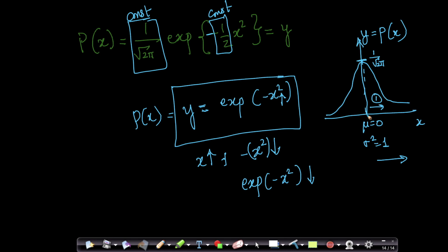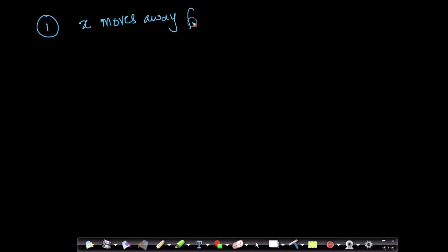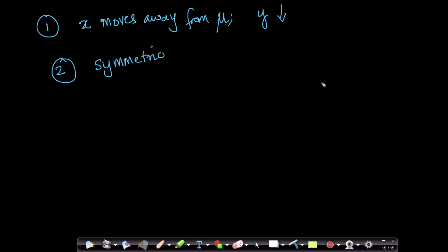Second observation: as x goes away from 0 even on the negative side, it doesn't matter because what we have is minus x squared. Whether x is positive or negative, x squared is going to be the same value. So whether you have x equals 2 or x equals minus 2, the value is going to be exactly the same. This means the function is symmetric.